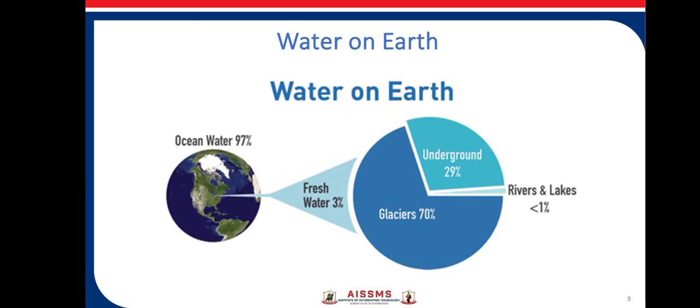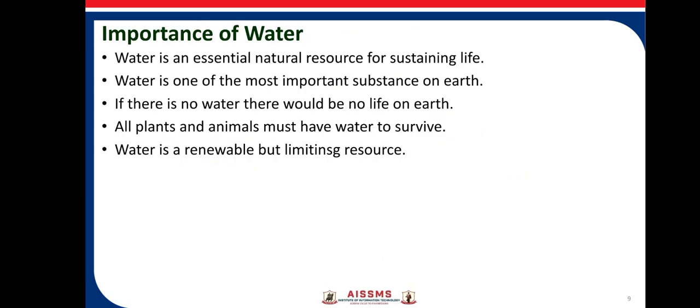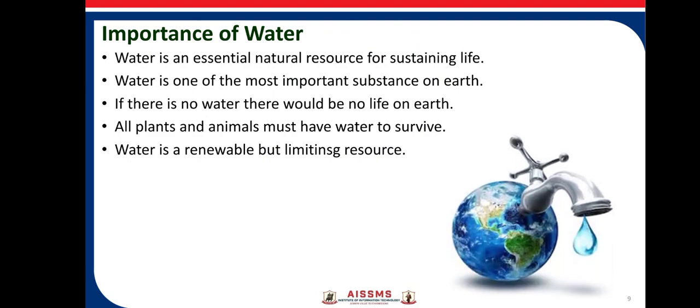Here you can see the figure which shows the percentage of water on the earth's surface. Water is an essential natural resource for sustaining life. Without water, we are not able to sustain life. Water is one of the most important substances on earth. If there is no water, there would be no life on earth. All plants, animals — that is, living beings, flora and fauna — must have water to survive.